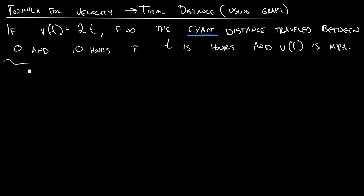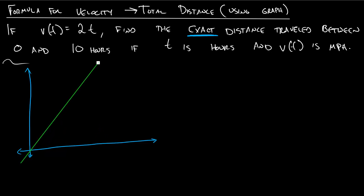So let's graph this out — and it's actually not too bad. If v of t equals 2t, at 0 our velocity is 0, and then it goes up at a slope of 2. We can label it: at 10 hours, our output is 20 miles per hour.